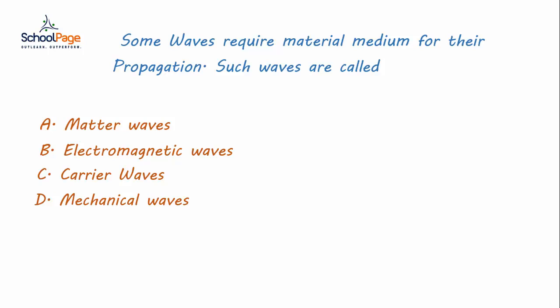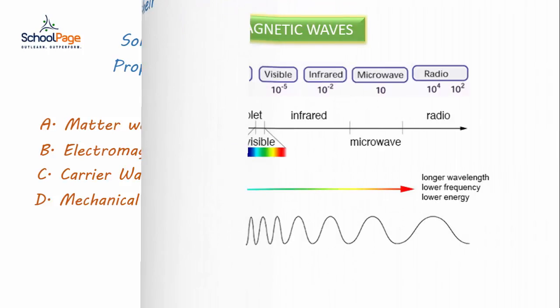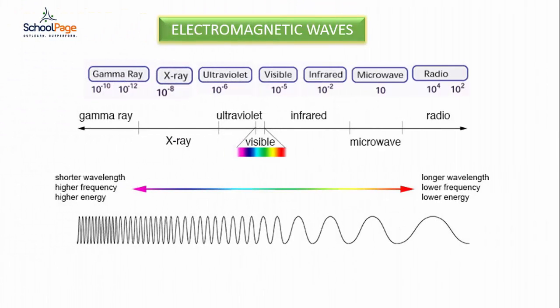There are different kinds of waves in nature. Electromagnetic waves are produced by vibration of charged bodies. These waves can travel through vacuum and do not require a material medium for their propagation.